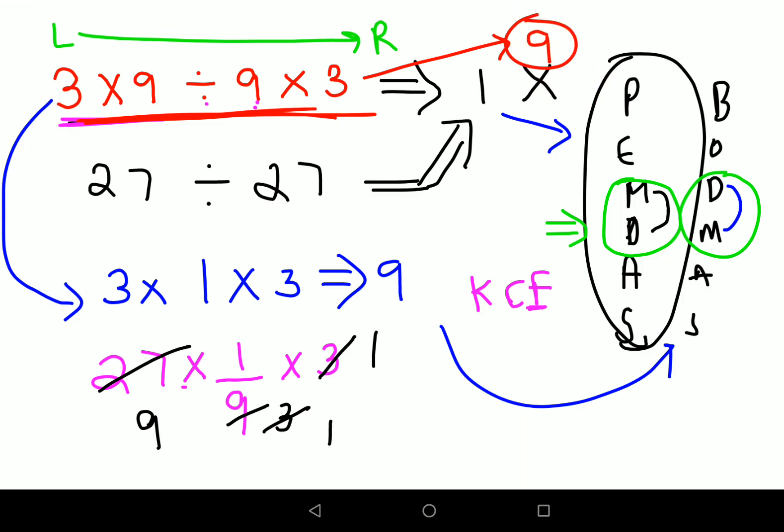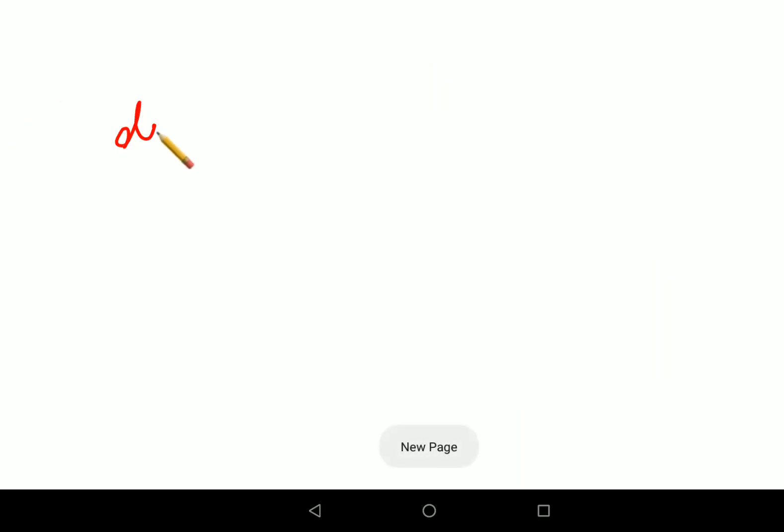And do not ever get confused what you should do first when it comes to division and multiplication, when that is the only operation given. So here you should always follow the concept of left to right. Now time for your DIY. Please tell me what will be the answer of 2 divided by 4 into 4 divided by 2.